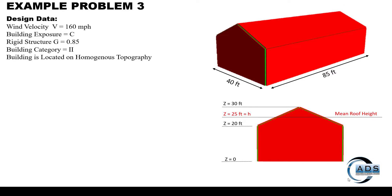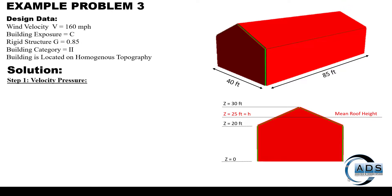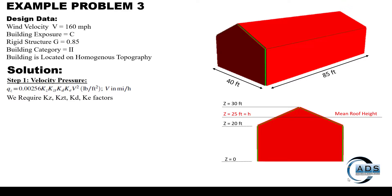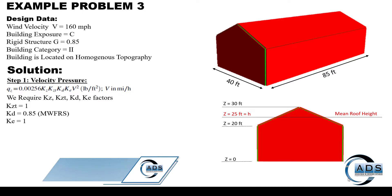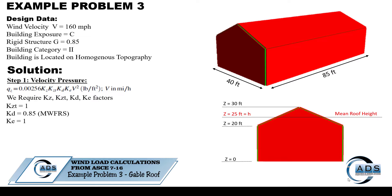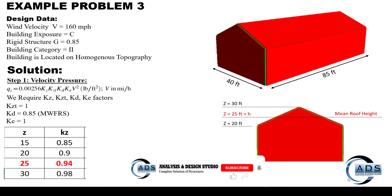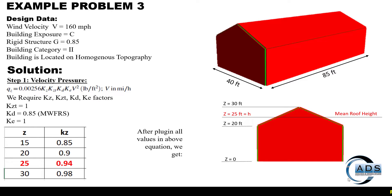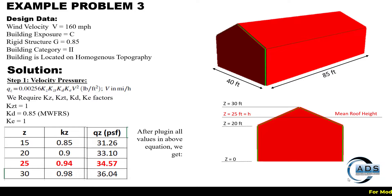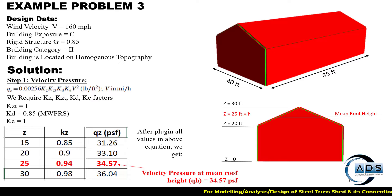Step 1 is to calculate the velocity pressure using the specific equation. We require certain factors as shown. We have already discussed in previous videos how to get these coefficients from different tables. This is the Kz factor against each z value, and after plugging in all the values in the equation we get qz as shown. The velocity pressure at z equals h is qh, highlighted in red.